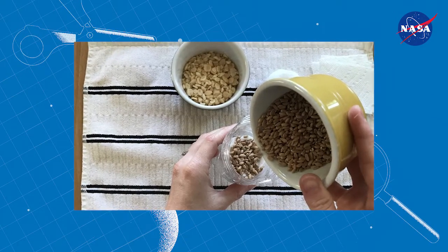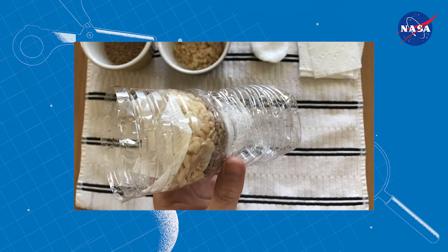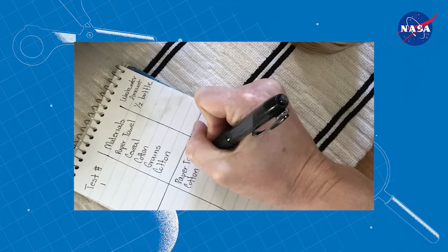Design your filter by layering or mixing the materials in the top bottle. Make a sketch of your design to improve it later. Be sure to document how much and which types of materials you've used as well.